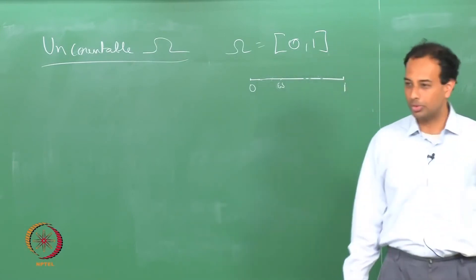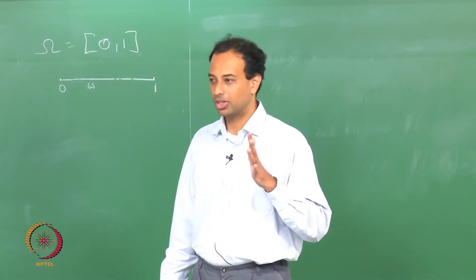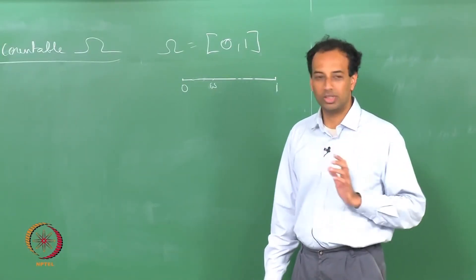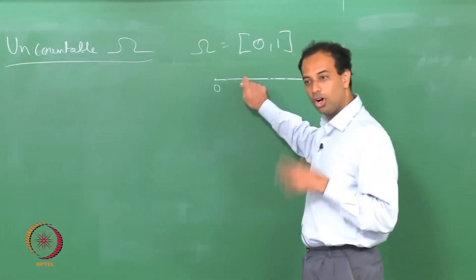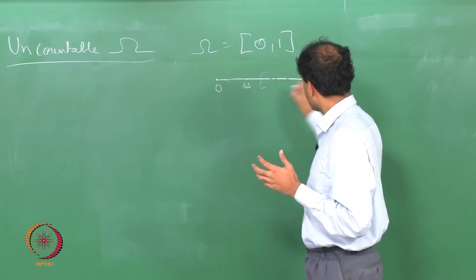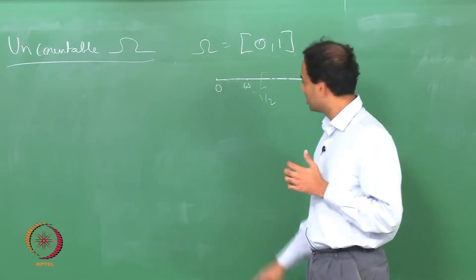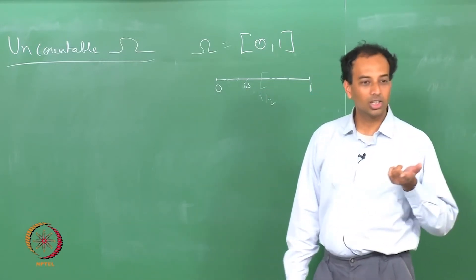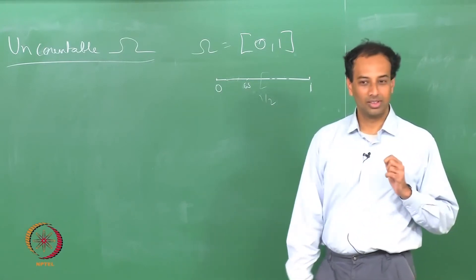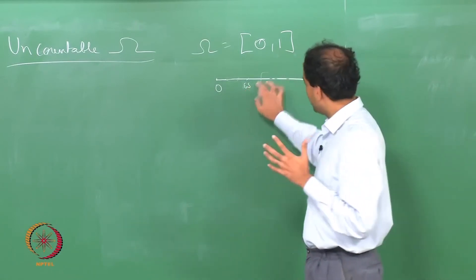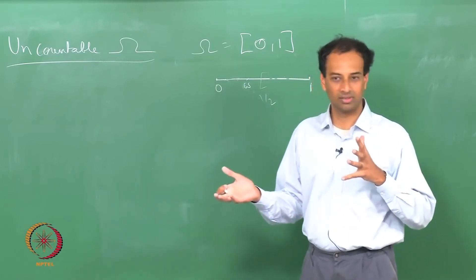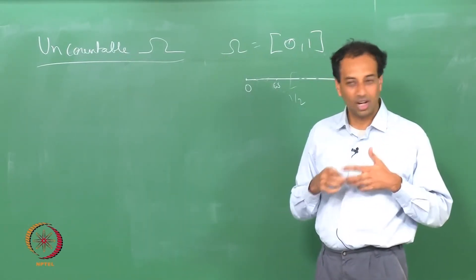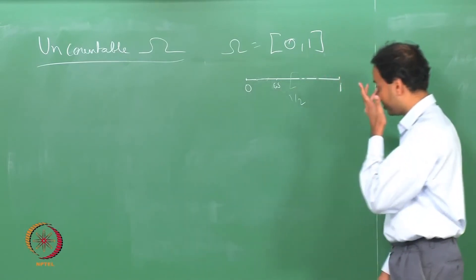But if you put 0 probability on all singletons, that does not tell you the probability of an uncountable set. Suppose I put probability 0 on all singletons and you ask: what is the probability of the interval [1/2, 1]? This interval has uncountably many singletons in it, but you cannot add probabilities over uncountable unions — only countable unions. So even assigning 0 to each singleton leaves you unable to determine the probability of an interval. This is the problem.